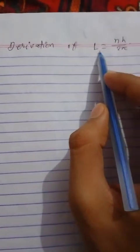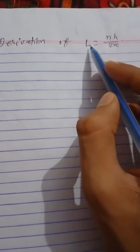Hello guys, welcome back to my YouTube channel. In this video, we are going to derive Bohr's quantization principle, which states that the angular momentum of an electron is equal to the integral multiple of h upon 2π. H upon 2π is also written as h-bar.